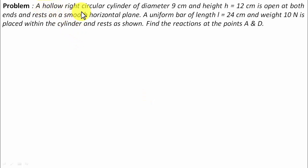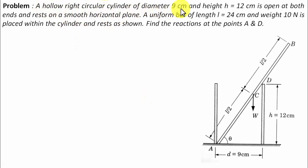A hollow right circular cylinder of diameter 9 centimeters and height h equals 12 centimeters is open at both ends. So the cylinder is some sort of a tube which has been kept on the ground.